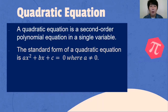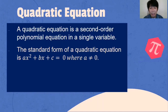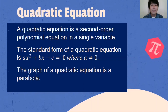Again, the standard form of a quadratic equation is AX squared plus BX plus C is equal to 0, where A should not be equal to 0. The graph of a quadratic equation is a parabola.